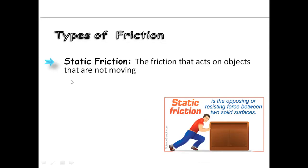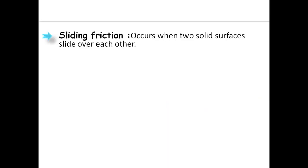The other type is dynamic friction. Dynamic friction is related to motion — it is the friction experienced by the body when the body is in motion. It is also called kinetic friction. Under dynamic friction there are two types: one is sliding friction and the other is rolling friction.